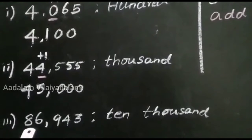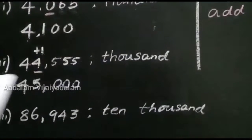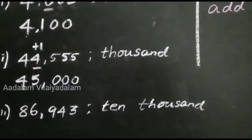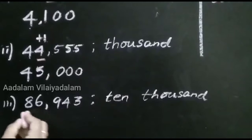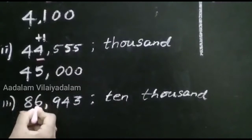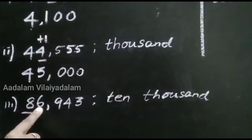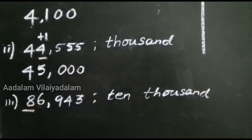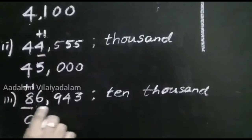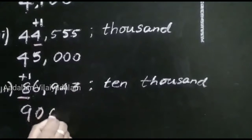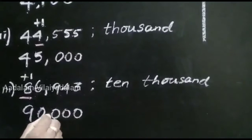Third question: 86,943, convert to nearest 10,000 place. First, you identify the 10,000 place: 1, 10, 100, 1000, 10,000. This is the 10,000 place. Next, look at the right side digit, which is 6. Since 6 is greater than 5, just add one number to the corresponding digit. 8 plus 1 equals 9. Remaining digits, we put 0. So 86,943 rounded off to the nearest 10,000 is 90,000.